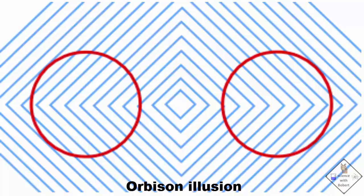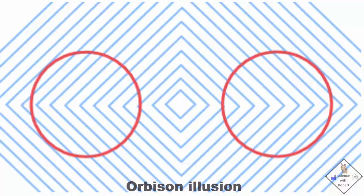This illusion is classified as an Orbison illusion. The circles drawn over straight lines coming out from the center make the circles look distorted.